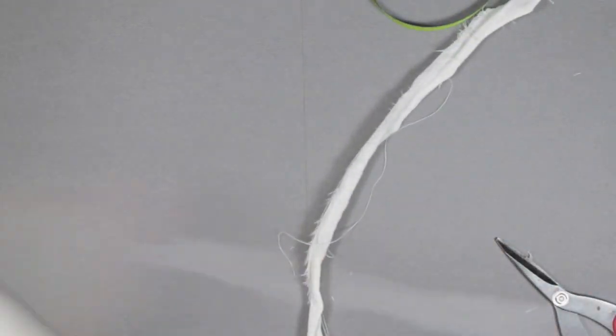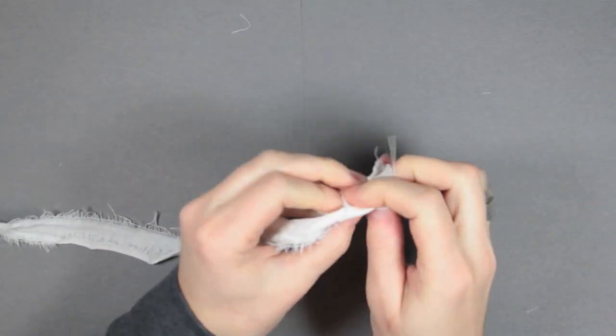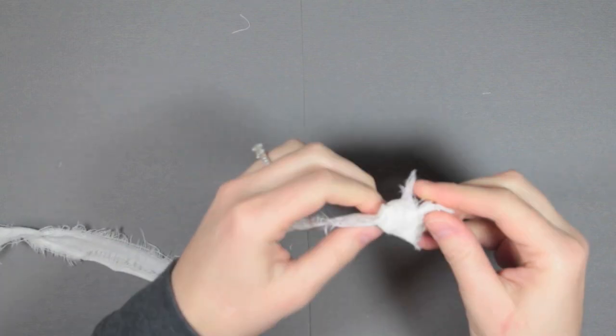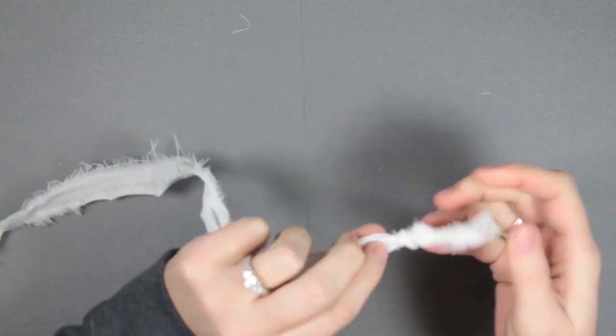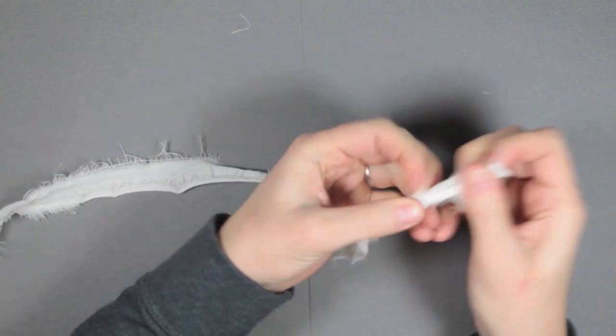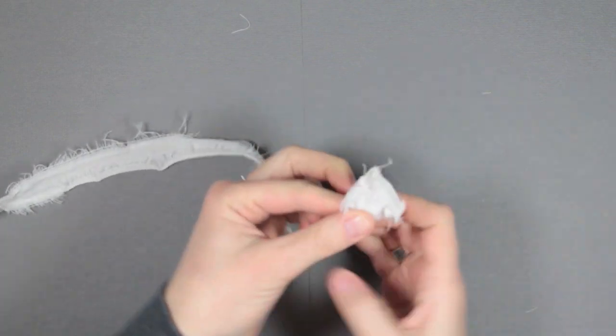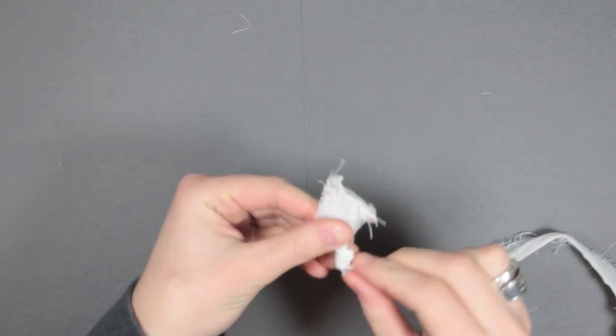Now I'm taking the canvas strip and tying a knot in one end, leaving a tiny tail. We're going to be creating a shabby chic flower out of this fabric.